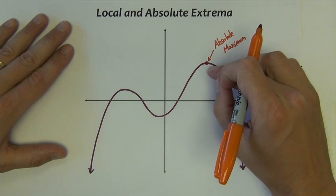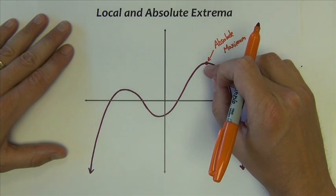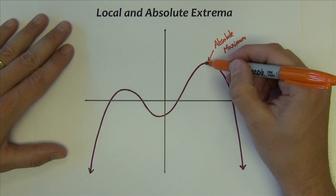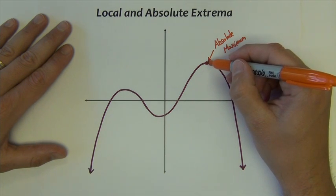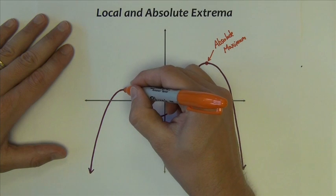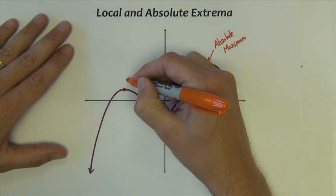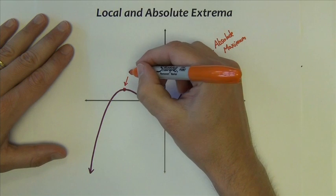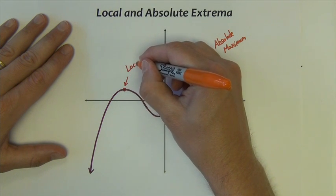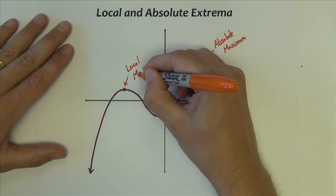But there are other points similar in nature in appearance to this. If we consider this point the absolute maximum or the maximum because it's at the top of a hill, there's another point at the top of a hill, that would be this point right here. Well this point is a maximum, but we call it a local maximum.